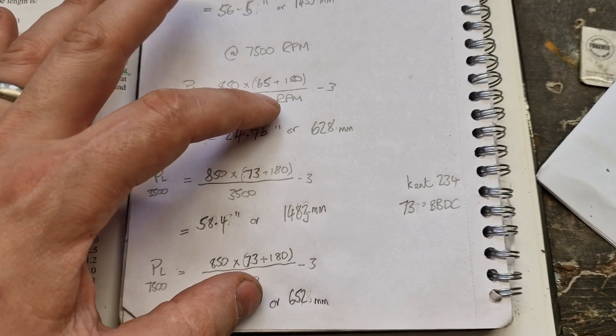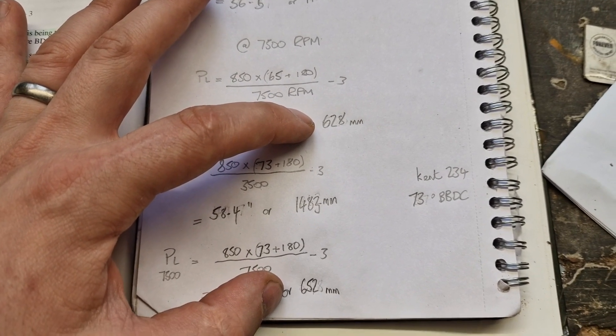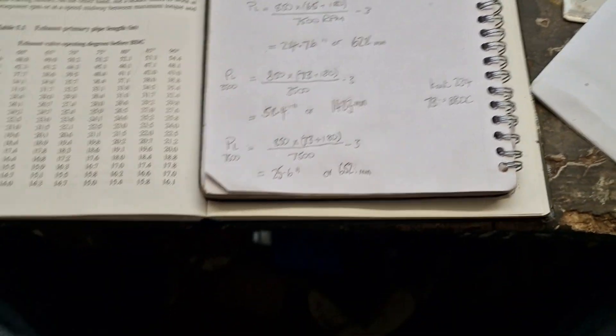So what I'll do, what I'm aiming for is something between 628 mil and 652 mil overall. And that's hopefully what I'll get. So you've got that overall length from here to here.